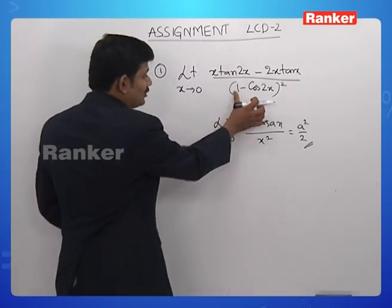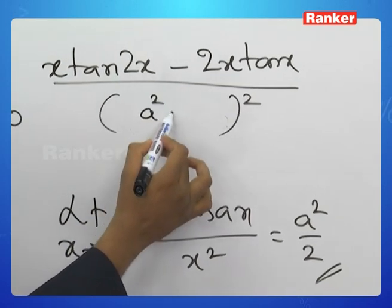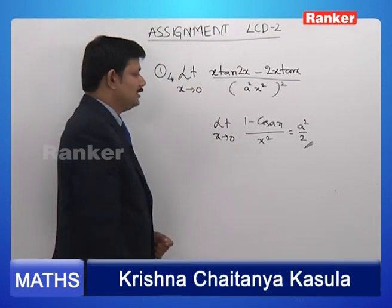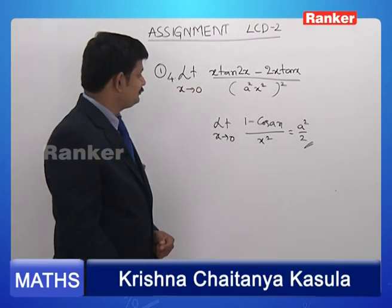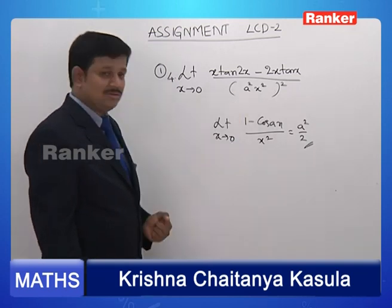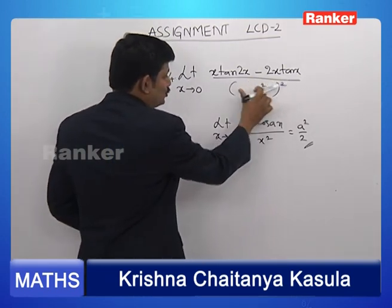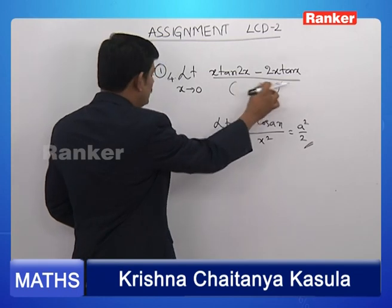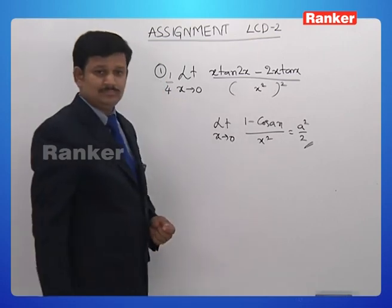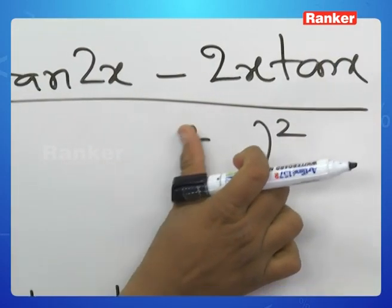So, directly let us use this result. We can replace 1 minus cos(ax) by a²x²/2. Squaring that makes it 4 in the denominator, and we write that outside the limit. In this question, a = 2 for 1 minus cos2x, so we get 2² = 4, and 4² = 16, giving us 4/16 = 1/4, with x² whole square written as x⁴.